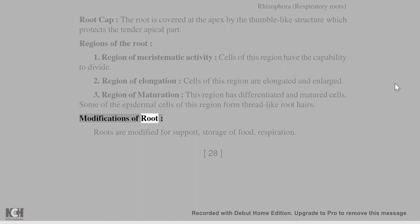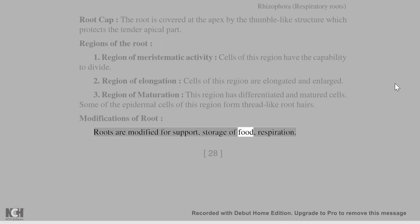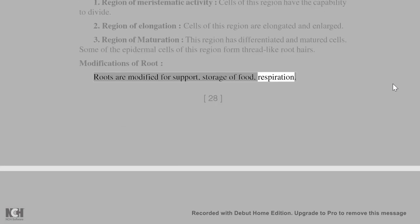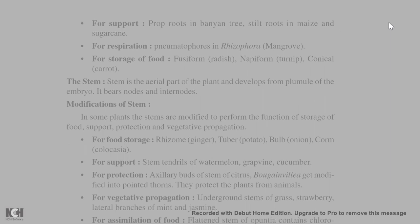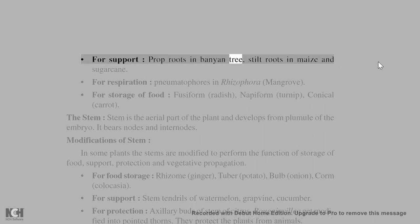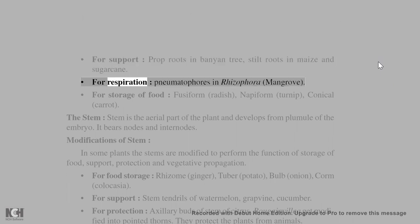Some of the epidermal cells of the maturation region form thread-like root hairs. Modifications of root: roots are modified for support, storage of food, and respiration. For support: prop roots in banyan tree, stilt roots in maize and sugarcane. For respiration: pneumatophores in rhizophora (mangrove).